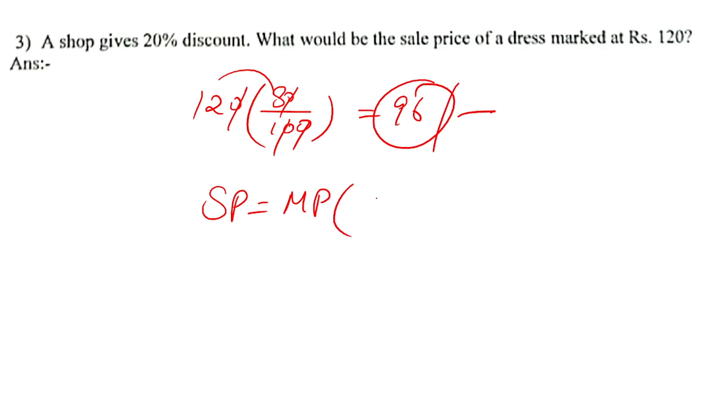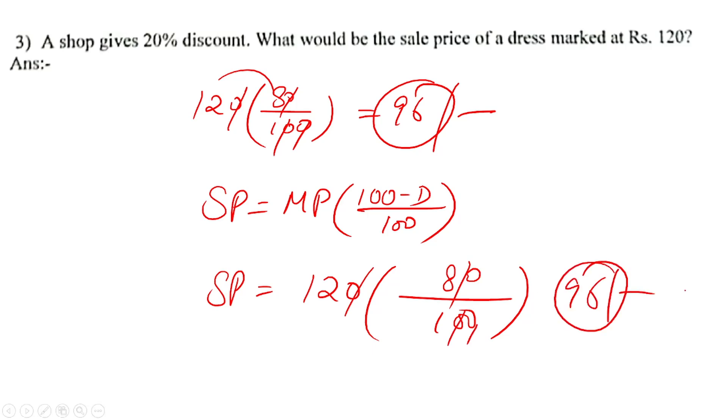The formula is: selling price equals marked price times (100 minus discount) divided by 100. So selling price equals 1200 times (100 minus 20) divided by 100, which gives 1200 times 80 divided by 100, which equals 960 rupees. The answer will be the same.